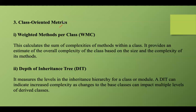Class-oriented metrics are used in software engineering to assess the quality and complexity of object-oriented software systems. Weighted Methods per Class (WMC) counts the number of methods in a class, giving weight to each method based on its complexity, such as cyclomatic complexity, and calculates the sum of the complexities of all methods within a class, providing overall complexity based on size and complexity of the methods. Depth of Inheritance Tree (DIT) measures the length of the inheritance path from a class to the root class in the hierarchy. A deeper inheritance tree can indicate greater potential for code reuse but may also increase complexity, as changes to a base class can impact multiple levels of derived classes.